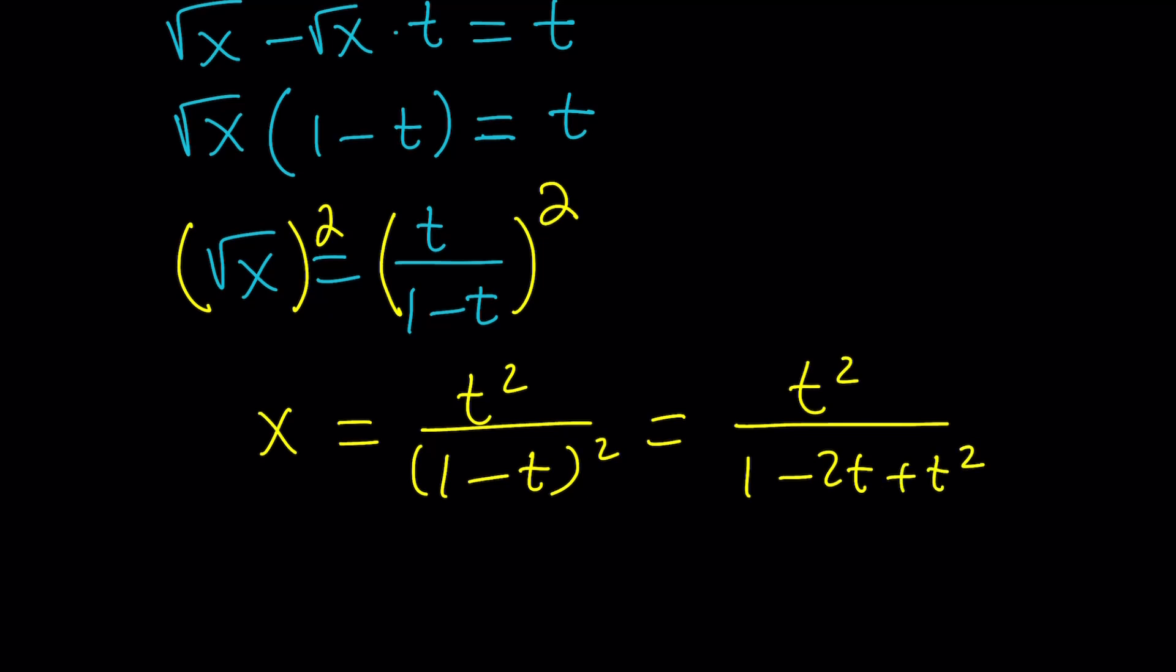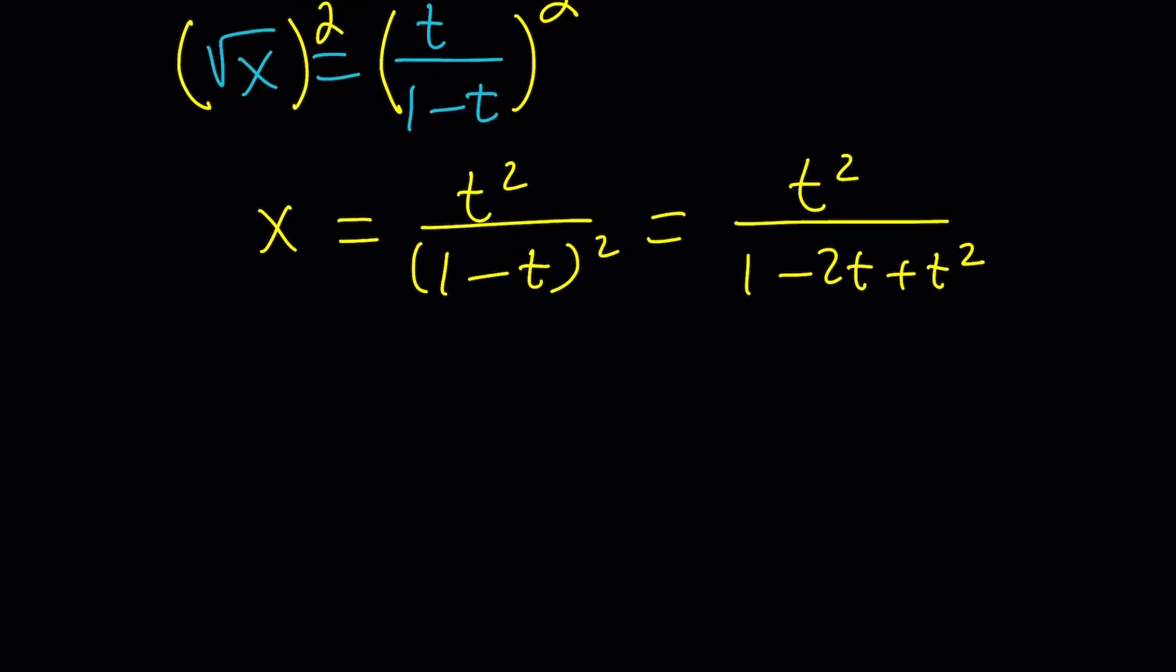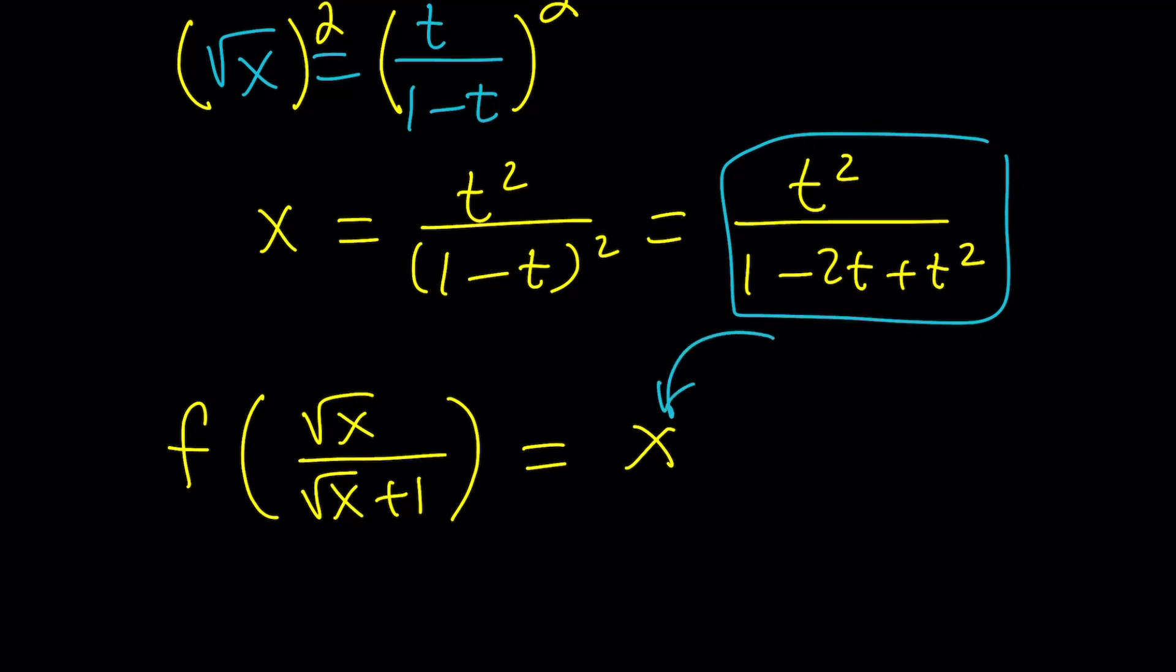Now since our expression on the right hand side was x, let's remember the original equation. It was f of root x over root x plus 1 equals x. We can replace x with this and that's going to give us what? Since we set this whole thing equal to t at the very beginning we get f of t equals x which is t squared divided by 1 minus 2t plus t squared.